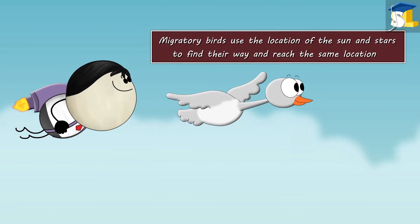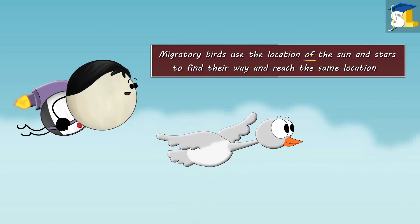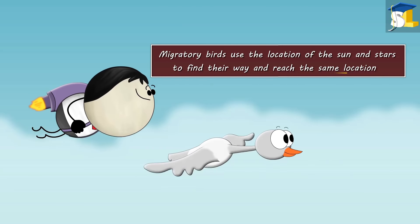Besides this, it is also believed that migratory birds use the location of the sun and stars to find their way and reach the same location.